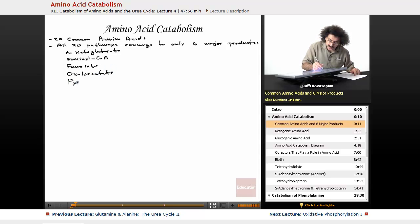We have pyruvate. And we have acetoacetyl-CoA. Acetoacetyl-CoA, which actually goes on to become the ketone bodies. We'll be looking at that in just a second.